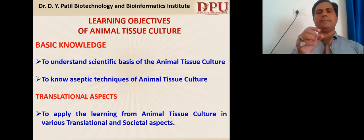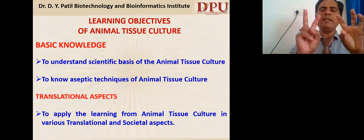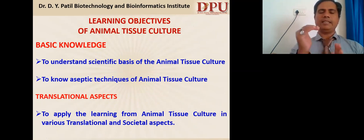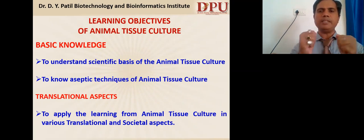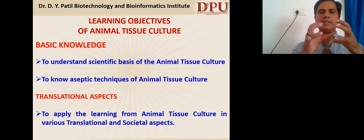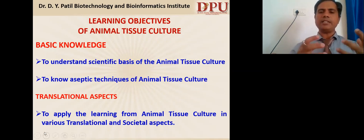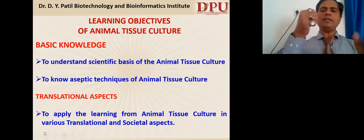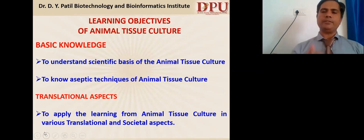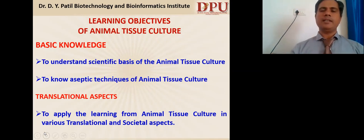The most important aspect students need to understand are the learning objectives of animal tissue culture. There are two main objectives: basic knowledge and translational aspects. In basic knowledge, a student will gain understanding of the scientific basis of animal tissue culture and experiential learning of aseptic techniques. In the translational aspect, a student will gain insights on how animal tissue culture helps in translational and societal aspects, where college-level knowledge is translated into community benefits.